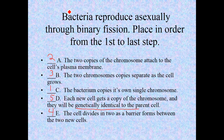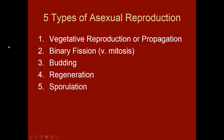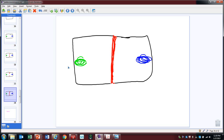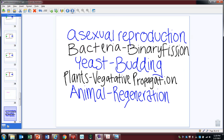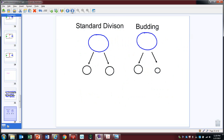Now I want to quickly show you budding. Budding is very simplistic. Here is standard division, and here is budding. If it's asexual reproduction, are these two daughter cells and these two daughter cells genetically identical to their parent cell?